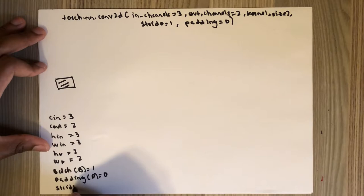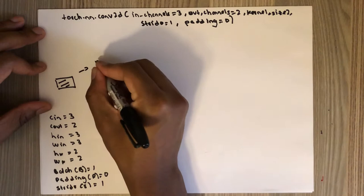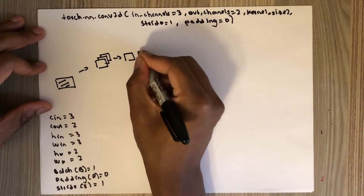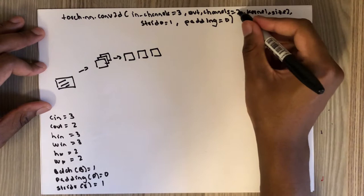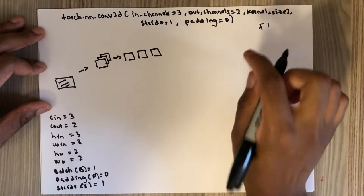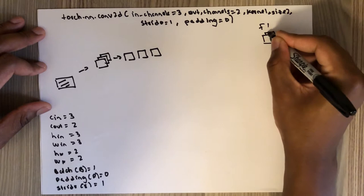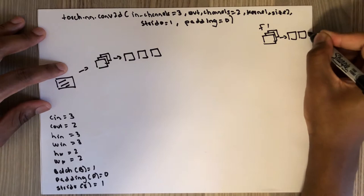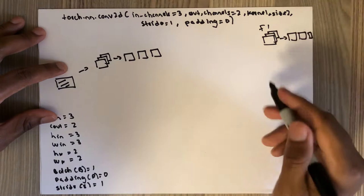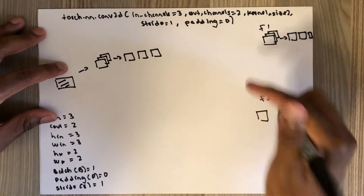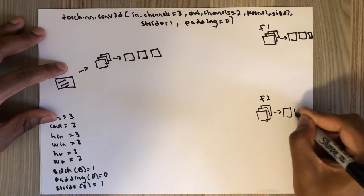Padding P=0, stride S=1. This image has three channels and each channel is actually a separate tensor. PyTorch will create two filters randomly — the dimension of those filters will depend on the input dimension, and each filter will have three channels because the input has three channels. Each channel is a separate tensor, so we have filter one and filter two. We have two filters because output channels is 2.